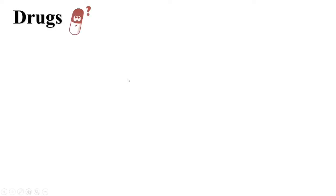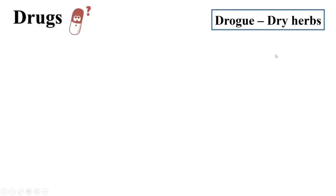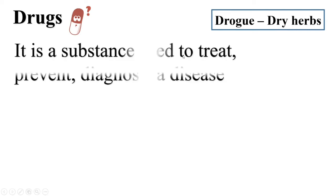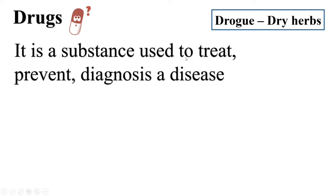Now we will see what is drugs. The word drug comes from the Greek word indicating a plant, because in ancient times most drugs were prepared from plants. The definition of drugs: it is a substance used to treat, prevent, or diagnose disease.